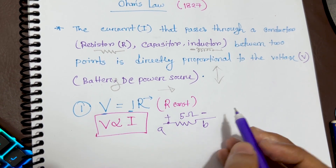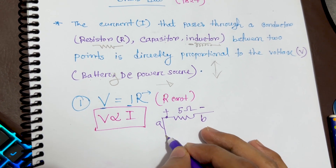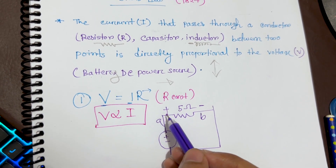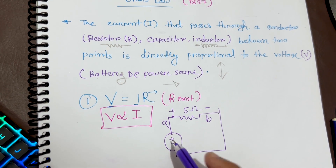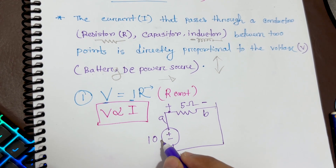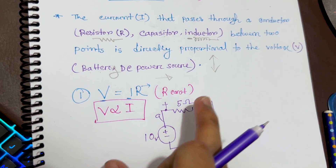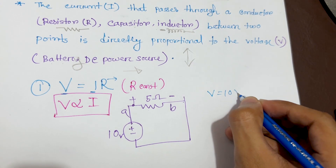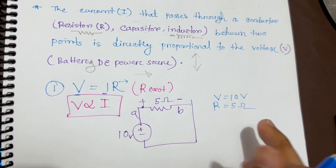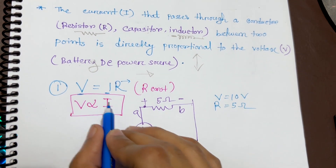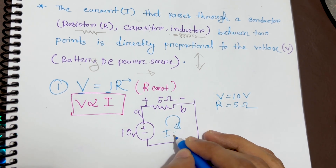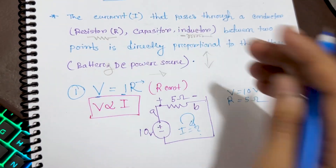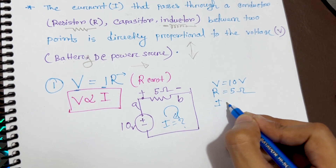Current is passing from left to right — the left side is the positive terminal and the right side is the negative terminal. We have a voltage source — a battery — with plus and minus terminals connected to the resistor. The current passing between these two points is proportional to the voltage applied. Suppose the voltage given is 10 volts. With V and R given, we can find I. V is 10 volts, the resistor is 5 ohms, and we need to find the current flowing through it.